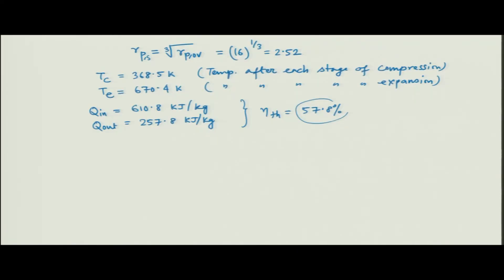However, having many stages is highly impractical in a real gas turbine. In practice, a maximum of two or three stages of compression is typical. This brings us to the end of the tutorial problems on Brayton cycle optimization. In the next tutorial we will look at exergy analysis of gas power cycles, and before that a quick introduction to the theory of exergy and exergy destruction.